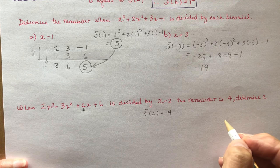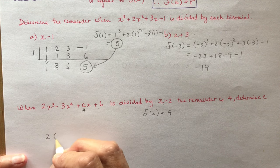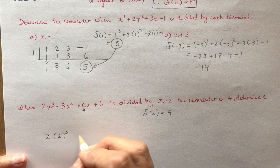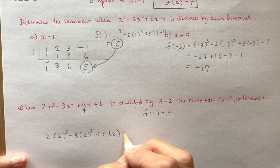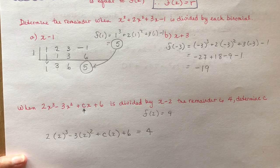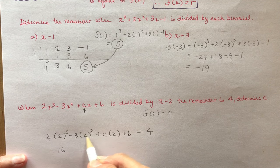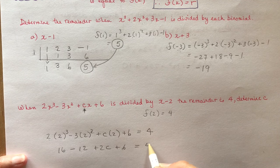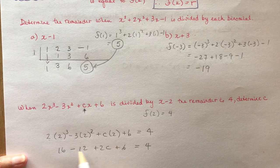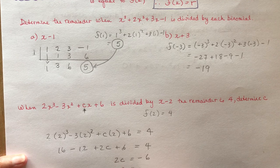You can see very easily what to do next — just plug it all in. So f at 2: I have 2 times 2 cubed minus 3 times 2 squared plus c times 2 plus 6, and that has to equal 4 because that's the remainder. So: 8 times 2 is 16, 4 times 3 is minus 12, I have 2c plus 6 equals 4. Simplifying: 16 minus 12 is 4, plus 6 is 10. So 2c equals 4 minus 10, which is minus 6. So c equals minus 3.